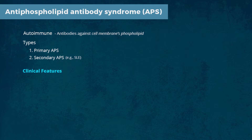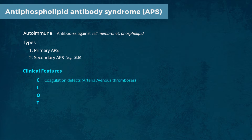What are the clinical characteristics of this disease? The disease is characterized by the mnemonic CLOT, which stands for the characteristic features of this syndrome. C stands for coagulation defect — that is, thrombosis, both arterial and venous.